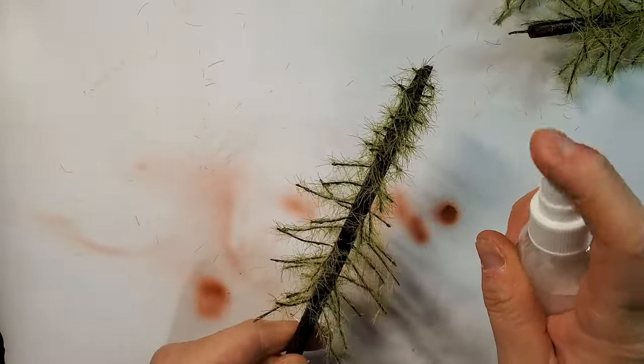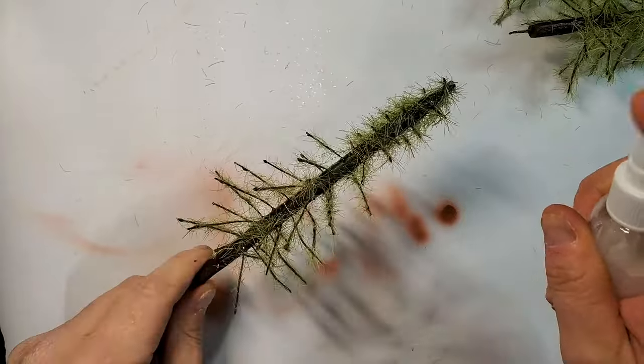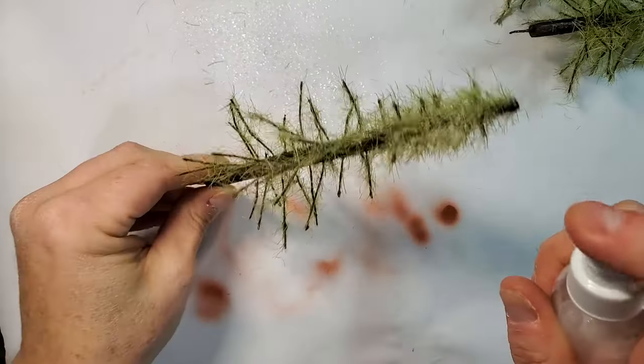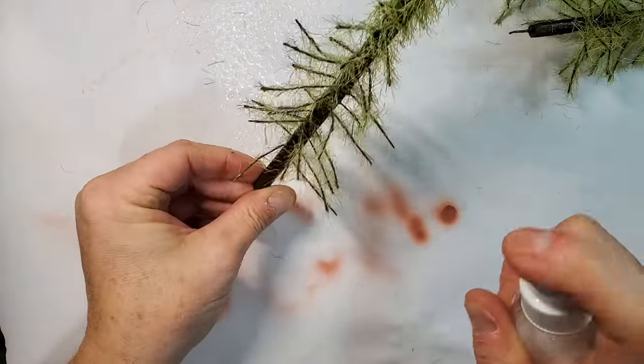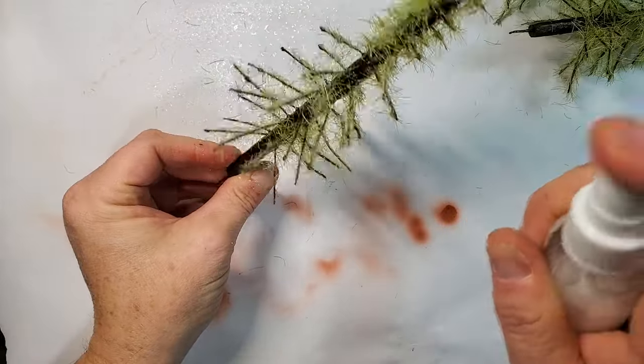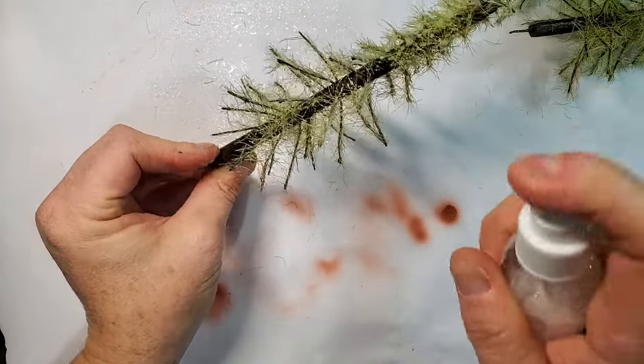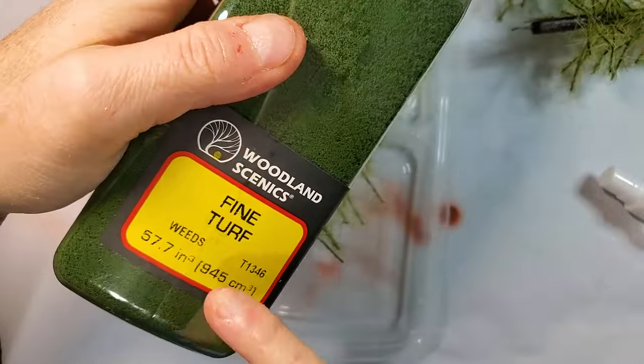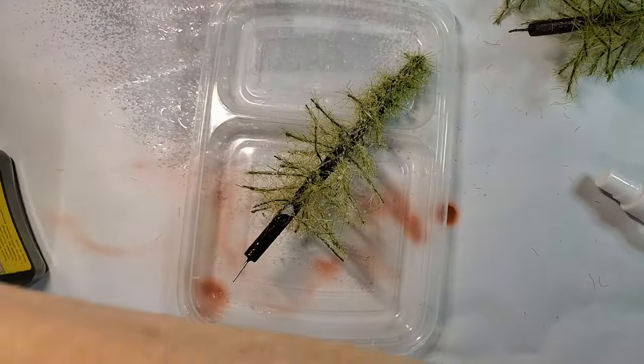So the next step, we're basically going to apply a mix of glue and water. So it's going to be thinned down, maybe a good 60% water, 40% glue. You can also use some spray glue. It doesn't really matter.